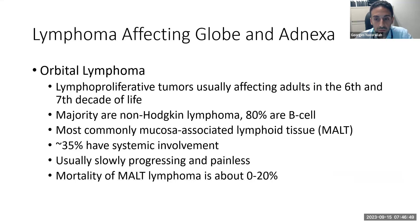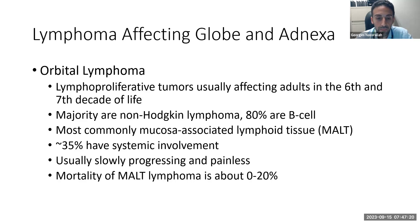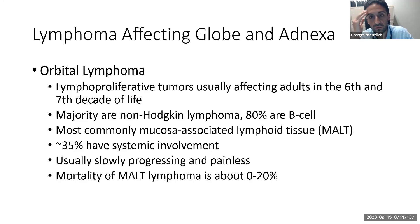Orbital lymphoma consists mostly of MALT lymphoma, though many other types can present in the orbit. Lymphoproliferative tumors usually affect adults in the sixth and seventh decade. The majority are non-Hodgkin and 80% are B-cell lymphoma, with MALT lymphoma being most common — similar to lymphoma in the GI tract. 35% of orbital cases have systemic involvement. It is usually a slow, progressing, painless process. Without knowing the acuity, it could easily be confused for orbital cellulitis or another acute process.